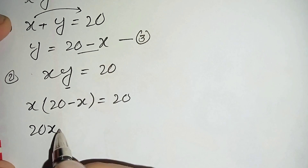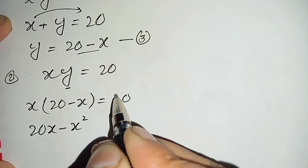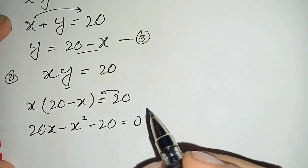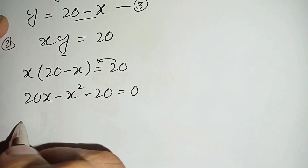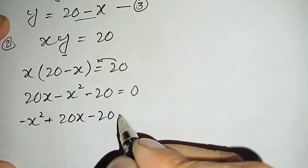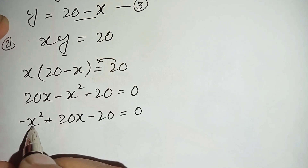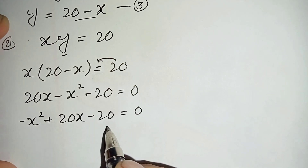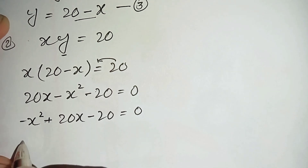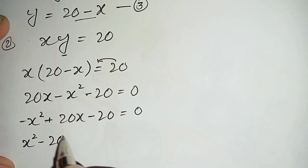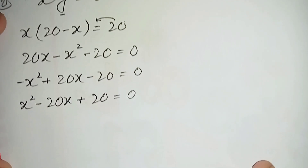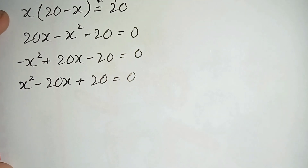This becomes x times (20 minus x) = 20, which expands to 20x minus x squared = 20. Rearranging: minus x squared plus 20x minus 20 = 0. Multiplying both sides by negative one to make the leading coefficient positive gives us x squared minus 20x plus 20 = 0.